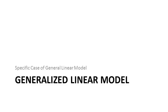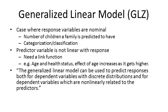We've covered the general linear model and hypothesis testing, so let's move on to the generalized linear model, or GLZ. In many cases you'll be using GLZ rather than GLM when not dealing with ANOVAs. The generalized linear model is a subset of the general linear model for specific cases — in particular when the response variable is nominal. For example, predicting the number of children a family will have doesn't make sense as a continuous prediction like 2.5; it makes sense as discrete values like 1, 2, 3, 4, or 5. GLZ also allows classification and categorization.